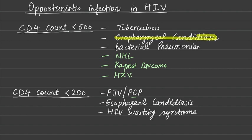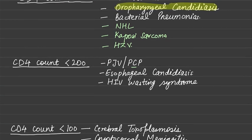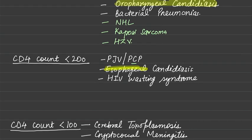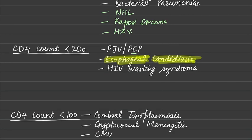The second infection at CD4 less than 200 is esophageal candidiasis. Note the difference: at CD4 less than 500 it was oropharyngeal candidiasis, and here at less than 200 it is esophageal candidiasis — these two should not be confused.